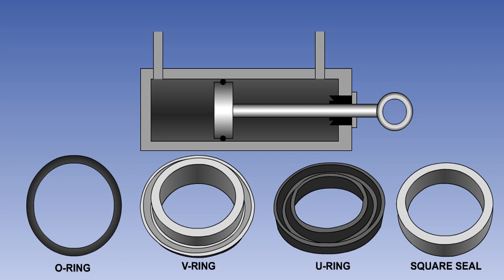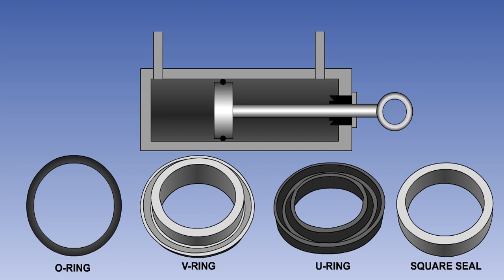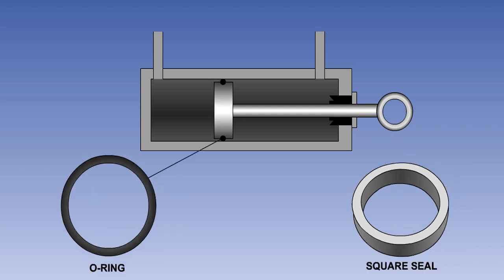Dynamic seals, fitted between sliding surfaces, may be of many different shapes, depending on their use and on the fluid pressures involved. U- and V-ring seals are effective in one direction only, but O-rings and square section seals are often used where pressure is applied in either direction.